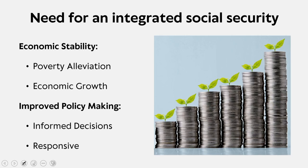Finally, when looking into economic stability, poverty alleviation is one of the most important and significant aspects. An integrated social security system provides a reliable safety net, reducing poverty and promoting social stability. If the social security scheme cannot provide a reliable safety net, cannot ensure reduced poverty and promote social stability, then there is absolutely no use of social security. Economic growth is also critical—ensuring a basic level of economic security means individuals can contribute more effectively to the economy.